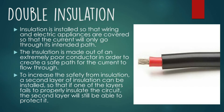Next is double insulation. Insulation is installed so that wiring and electric appliances are covered and the current will only go through its intended path. The insulation is made out of an extremely poor conductor in order to create a safe path for the current to flow through. To increase safety, a second layer of insulation can be installed, so that if one layer fails to properly insulate the circuit, the second layer will still be able to protect it.